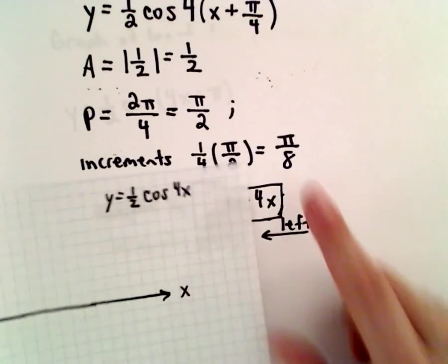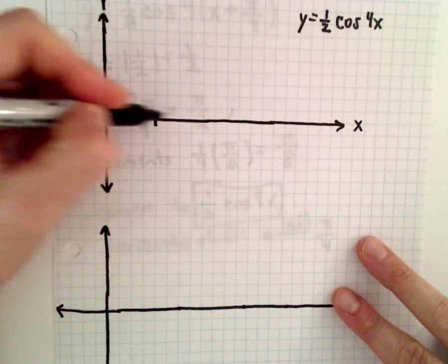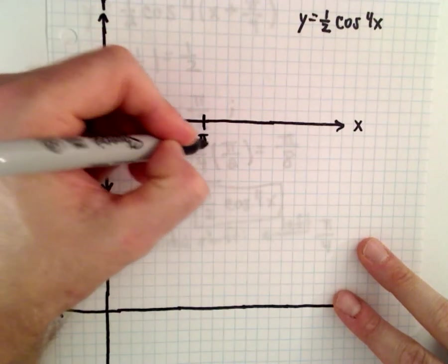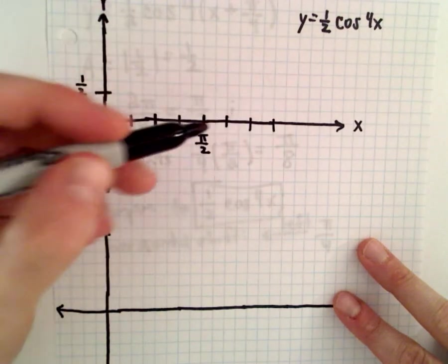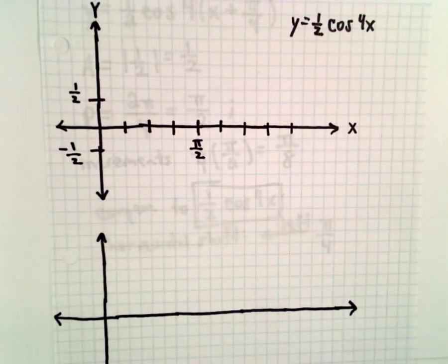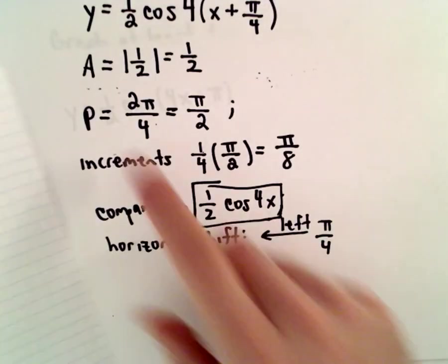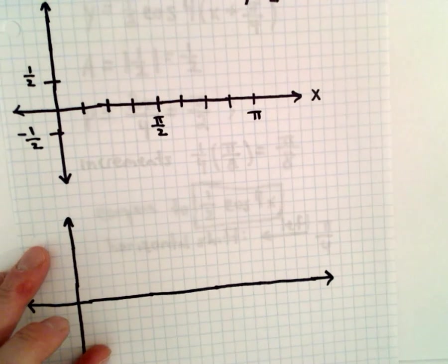And now I'm going to start using my increments of pi over 8. So there will be 1 pi over 8, 2 pi over 8, 3 pi over 8, 4 pi over 8, or pi over 2, 5 pi over 8, 6 pi over 8, 7 pi over 8, 8 pi over 8, or pi. And again, that makes sense if the period's pi over 2, well, hey, two periods will be at pi.